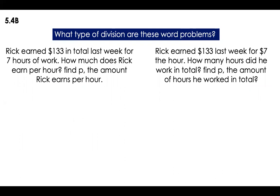So what type of division are these word problems? Let's read both. Rick earned $133 in total last week for seven hours of work. How much does Rick earn per hour? Find P, the amount that Rick earns per hour. The other example: Rick earned $133 last week for $7 per hour. How many hours did he work in total? Find P, the amount of hours that he worked. Be very intentional with the question — the question tells you if this is partitive or quotative.